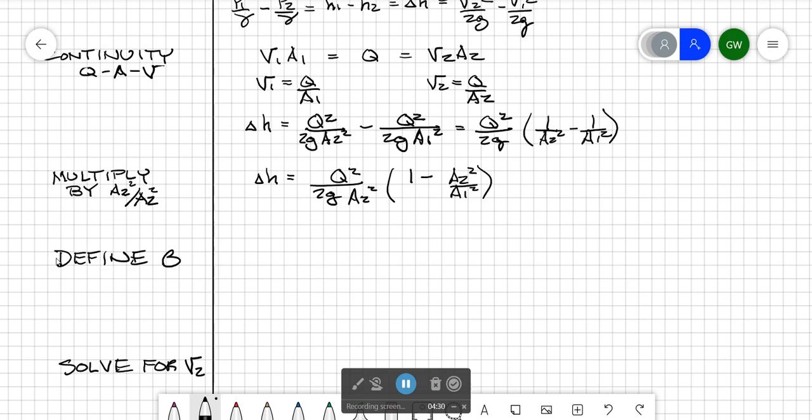We're now going to define beta. Beta equals our small diameter, our throat diameter, divided by our pipe diameter, d2 over d1. That implies that our ratio of areas a2 over a1 equals beta squared. And that implies that the ratio of our areas squared, if we square both of those, that equals beta to the fourth.